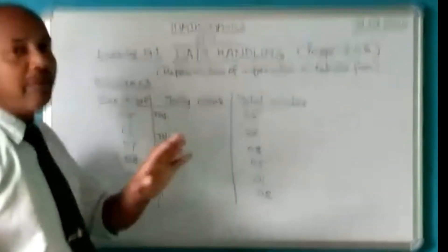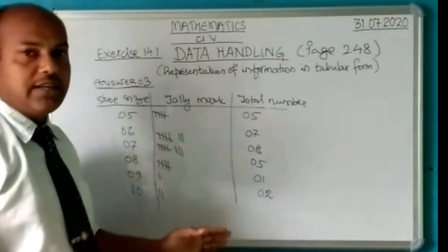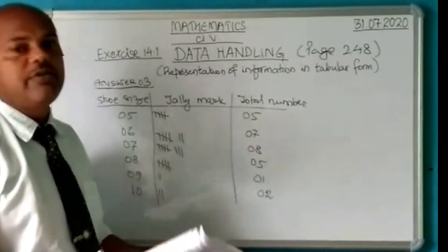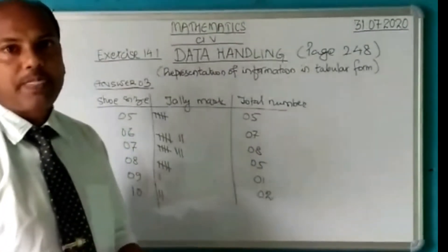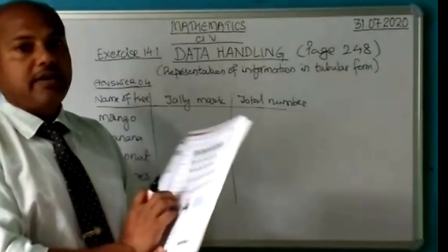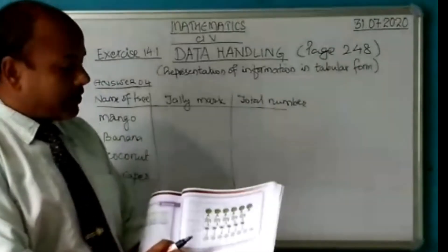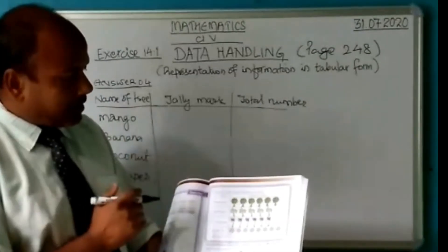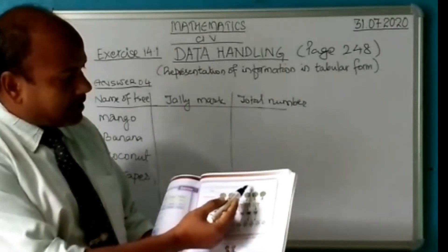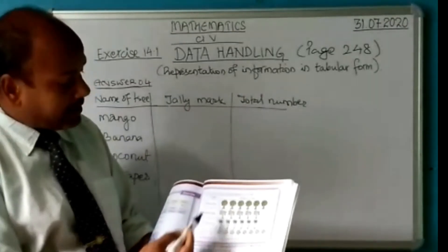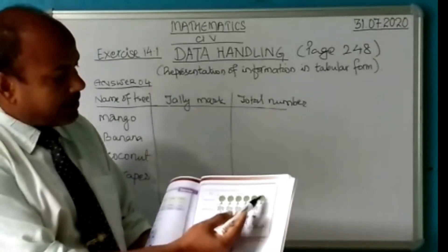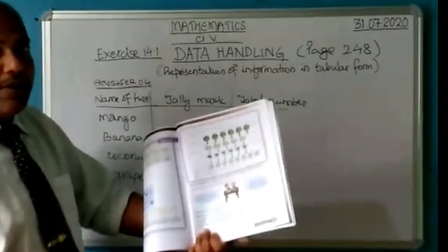Now get ready with question number four. In question number four, look at the picture — by using the given pictograph, make a table of the given data. What you can see is mango trees. How many are there? One, two, three, four, five, six — six mango trees are there.